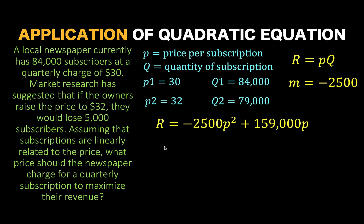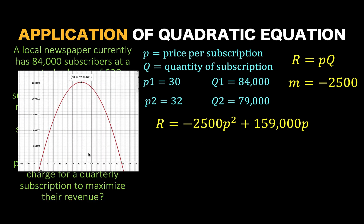Our goal is to maximize this revenue function. Notice that this is a quadratic function that opens downward, and the graph of this function looks like a downward-opening parabola. The maximum revenue happens at the vertex. So we need to find the coordinate of the vertex. The x-coordinate is given by H equals negative B over 2A, where B is the coefficient of the linear term and A is the coefficient of the squared term.